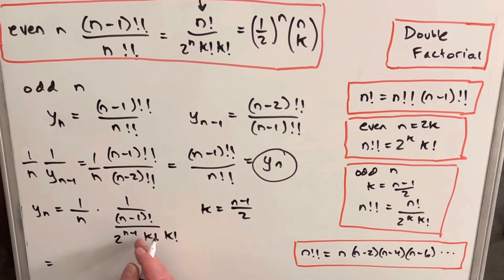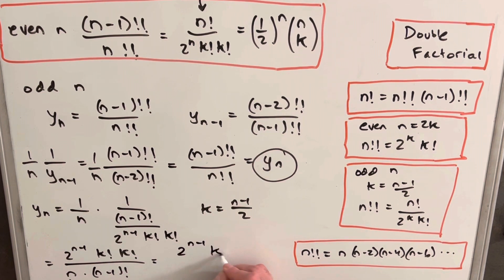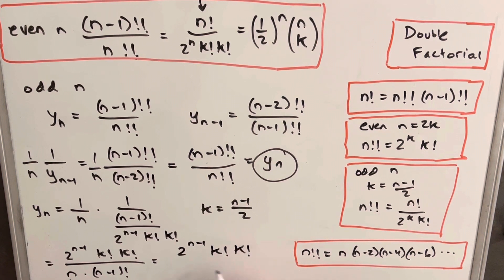So then all we need to do now is we just need to flip this into the numerator, so we're going to have 2 to the n minus 1 times k factorial times k factorial over n times n minus 1 factorial. But then you'll notice n times n minus 1 factorial, this whole thing is actually just n factorial. So rewriting this for our final formula for the odd case, we're going to have 2 to the n minus 1 times k factorial times k factorial over n factorial.